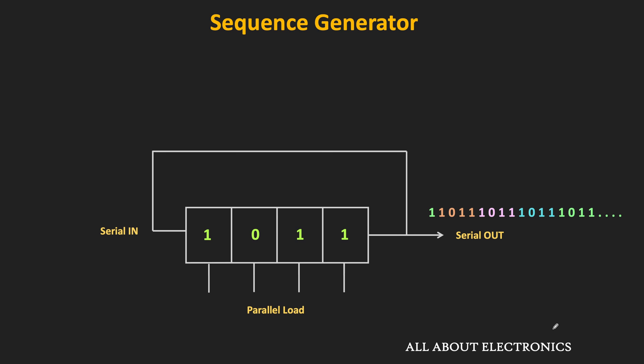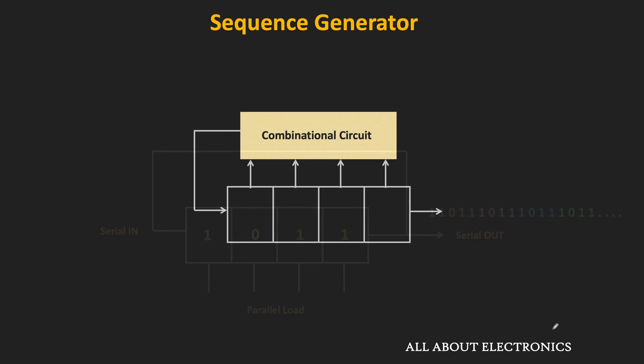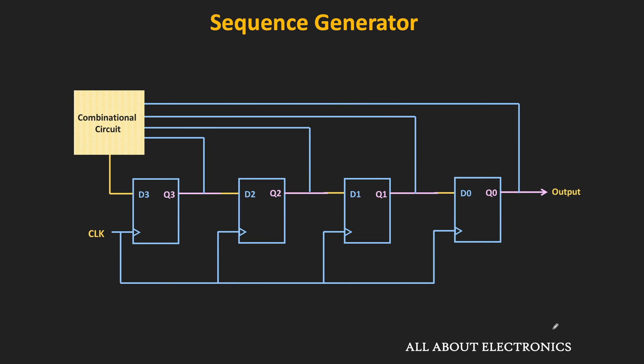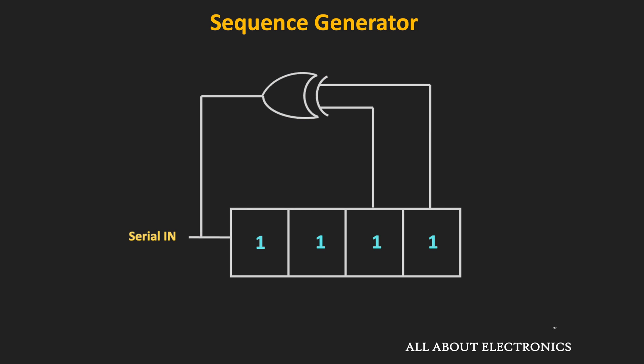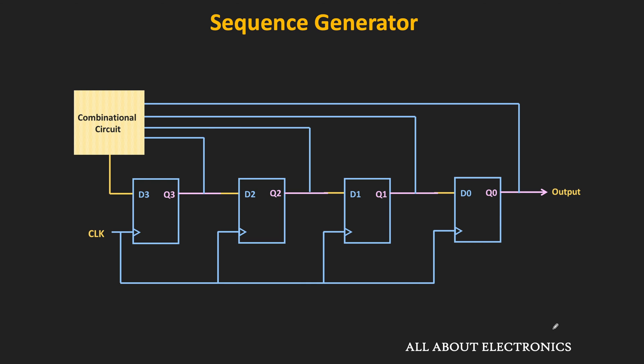But there is another way using which we can generate the same sequence using a lesser number of flip-flops. For that, we need to use a combinational circuit in the feedback of the shift register. Using this method, if we have n number of flip-flops, then the maximum length of the sequence which we can generate is equal to 2 to the power n minus 1. We have already seen how to generate a pseudo-random binary sequence of maximum length. But sometimes we need to generate a particular pattern of specific length, and using this method it is possible.